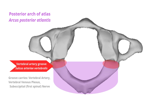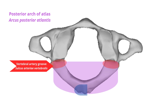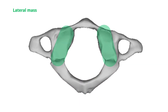Important attachment points for the surrounding ligamentous structures are the edges of the posterior arch. The superior margin provides attachment to the atlantooccipital membrane, while the highest pair of ligamenta flava attach to the inferior margin. A bony prominence known as the posterior tubercle is located at the apex of the posterior arch. The posterior tubercle serves as an attachment point for the ligamentum nuchae and is homologous to the spinous process of typical vertebrae.